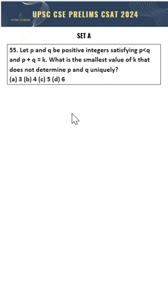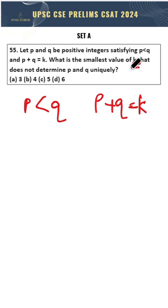Let p and q be positive integers satisfying p less than q and p plus q equals k. What is the smallest value of k that does not determine p and q uniquely? So it's very important to understand the question here.